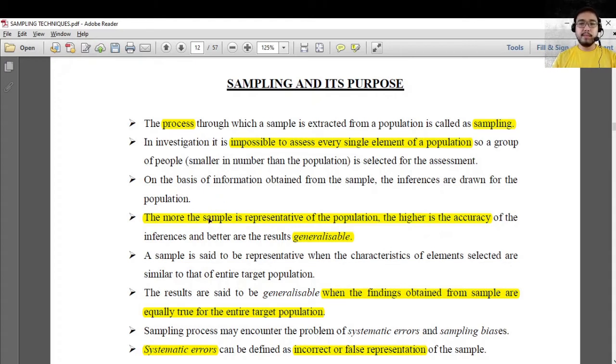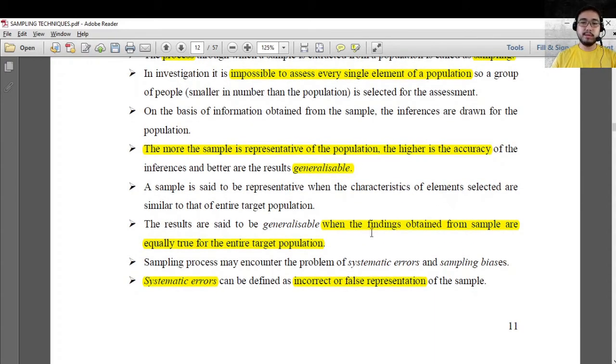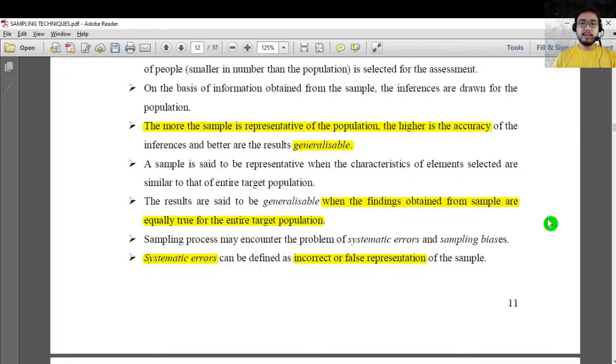However, the more the sample is representative of the population, the higher it comes to its accuracy. It means that it is generalizable if the sample is representative of its population. If we say generalizable, the findings that you can obtain from the sample are true for the entire population.